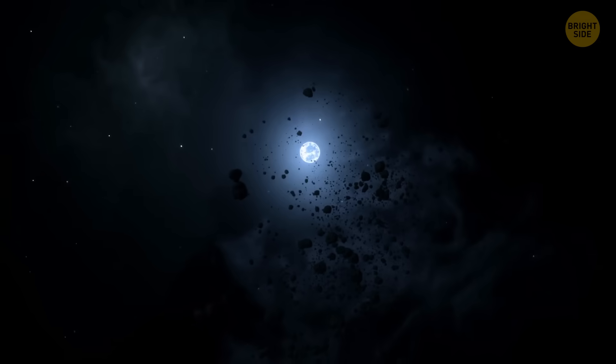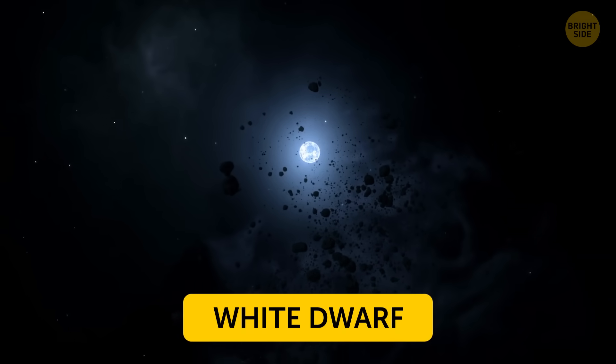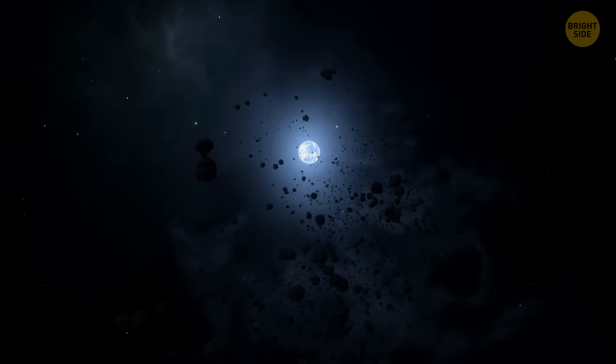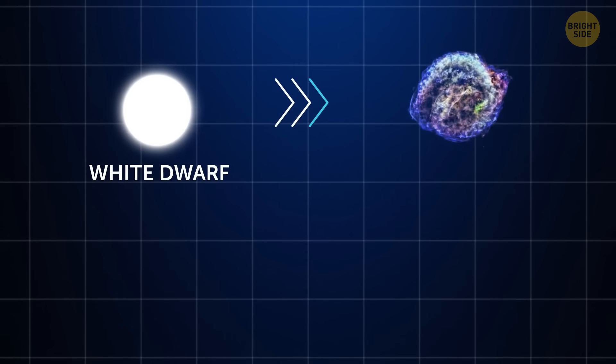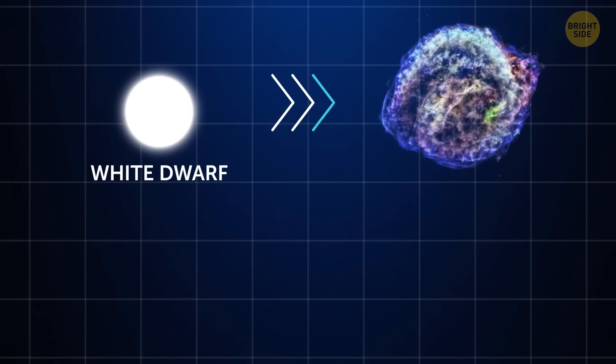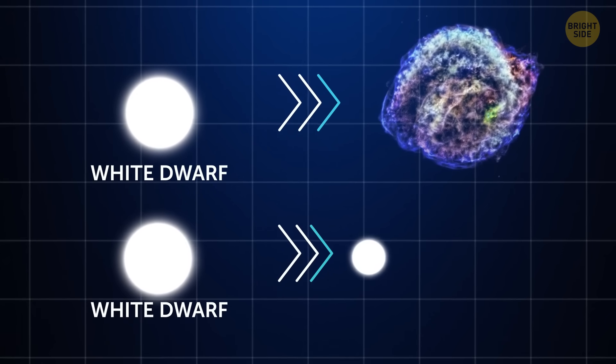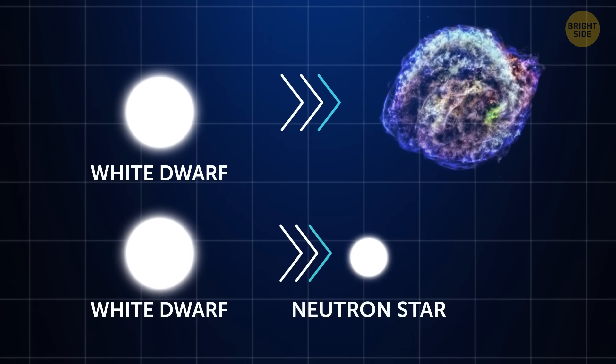One explanation is that it came from a white dwarf, which is the leftover core of a smaller star like our Sun after it runs out of fuel. Normally, when white dwarfs explode, they're destroyed completely. But in rare situations, instead of blowing apart, a white dwarf might collapse into itself and turn into a neutron star.